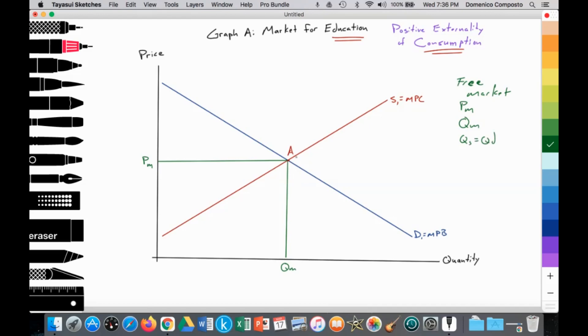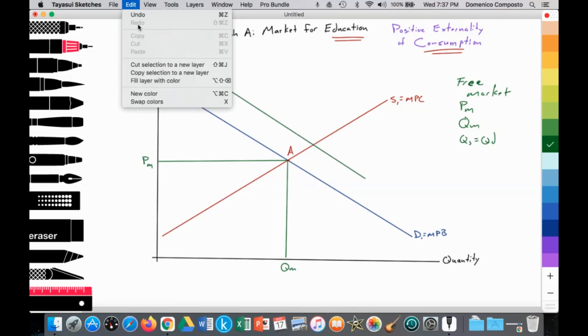But society sees that when people consume education, it increases their skill sets, they improve their critical thinking skills, they make better informed decisions, and so on. Society would like more consumers to consume more education. So we can highlight that with an additional demand curve, which we'll illustrate here.